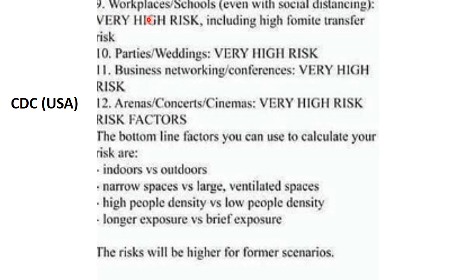Workplaces and schools, even with social distancing, are very high risk including high fomite transfer — therefore schools are not a good idea to open early. Parties and weddings are very high risk. Business networking conferences are very high risk. Arenas, concerts, and cinemas are very high risk. The bottom line to calculate your risk: indoors are higher risk than outdoors; narrow spaces are higher risk than large ventilated spaces; high people density is higher risk than low density; and longer exposure has higher risk than brief exposure. This has been studied in depth and comes from the CDC.